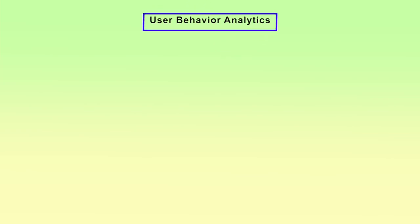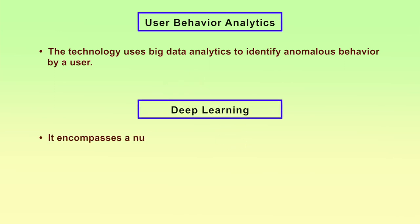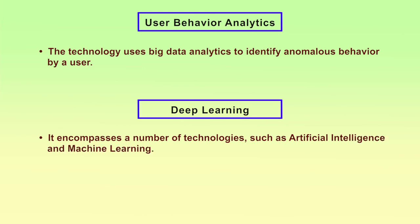User behavior analytics is another emerging security technology. It uses big data analytics to identify anomalous behavior by a user. In social networking, with huge volumes of data being transferred and shared, it is very difficult to perform analytics, but with the help of big data analytics, user behavior can be thoroughly analyzed. Deep learning is also an emerging security technology, encompassing a number of technologies — artificial intelligence and machine learning — used to detect unusual incidents at any level, irrespective of huge volumes of data. With the help of deep learning, any malicious activity can be detected.